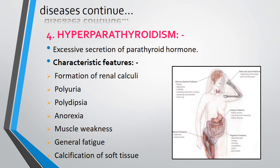The fourth is hyperparathyroidism — excessive secretion of parathyroid hormone. Characteristic features include formation of renal calculi (kidney stones), polyuria (excessive urination), polydipsia, anorexia (loss of appetite), muscle weakness, general fatigue, and calcification of soft tissue.